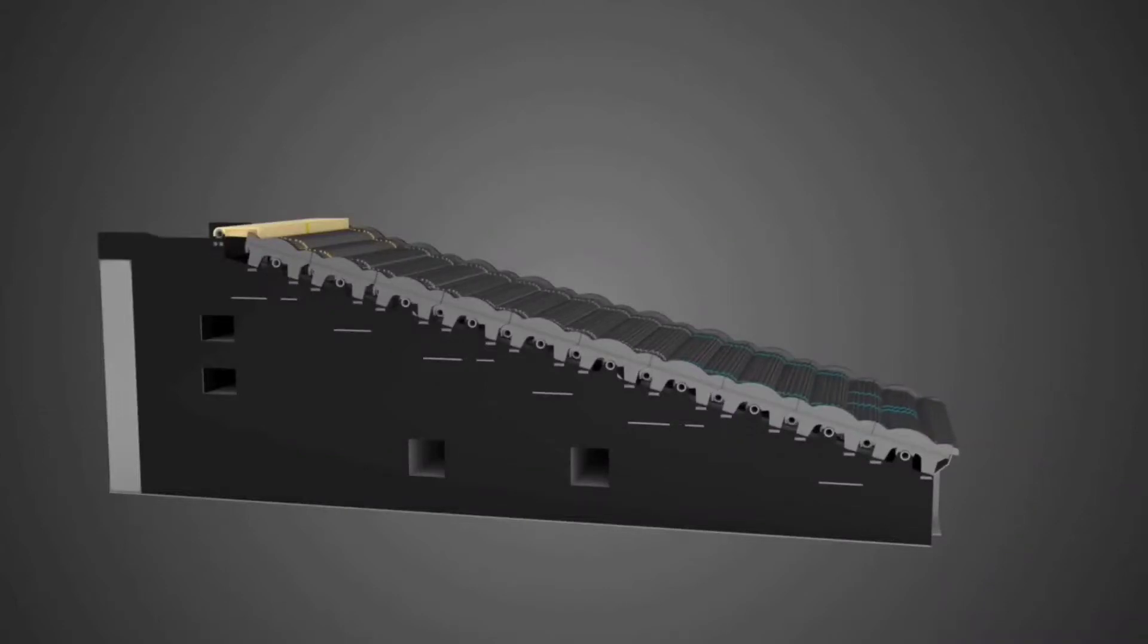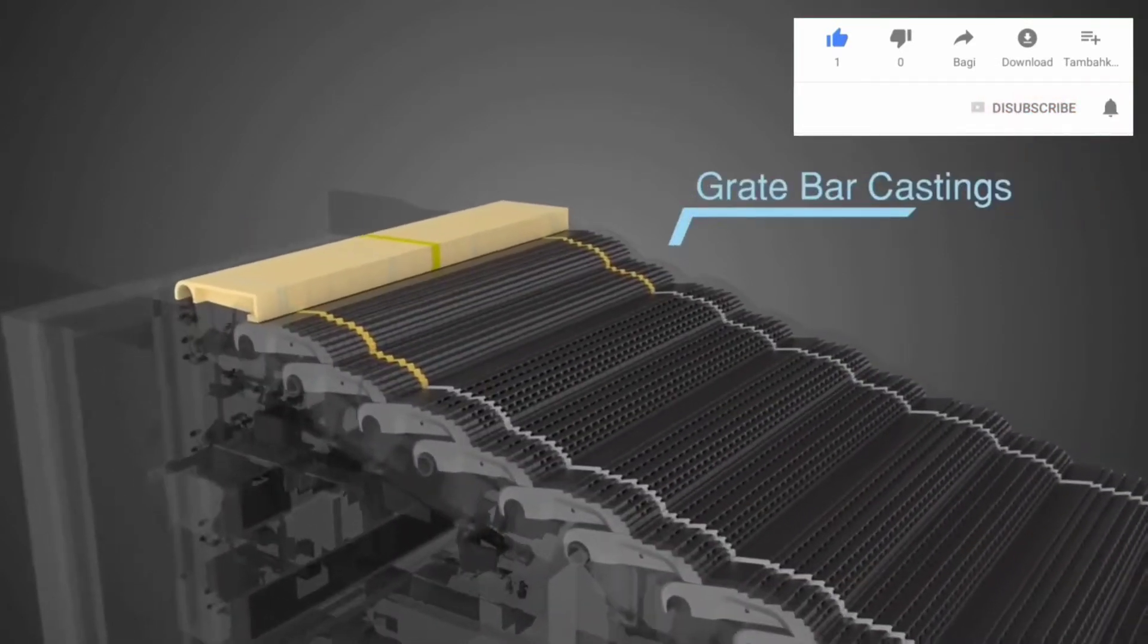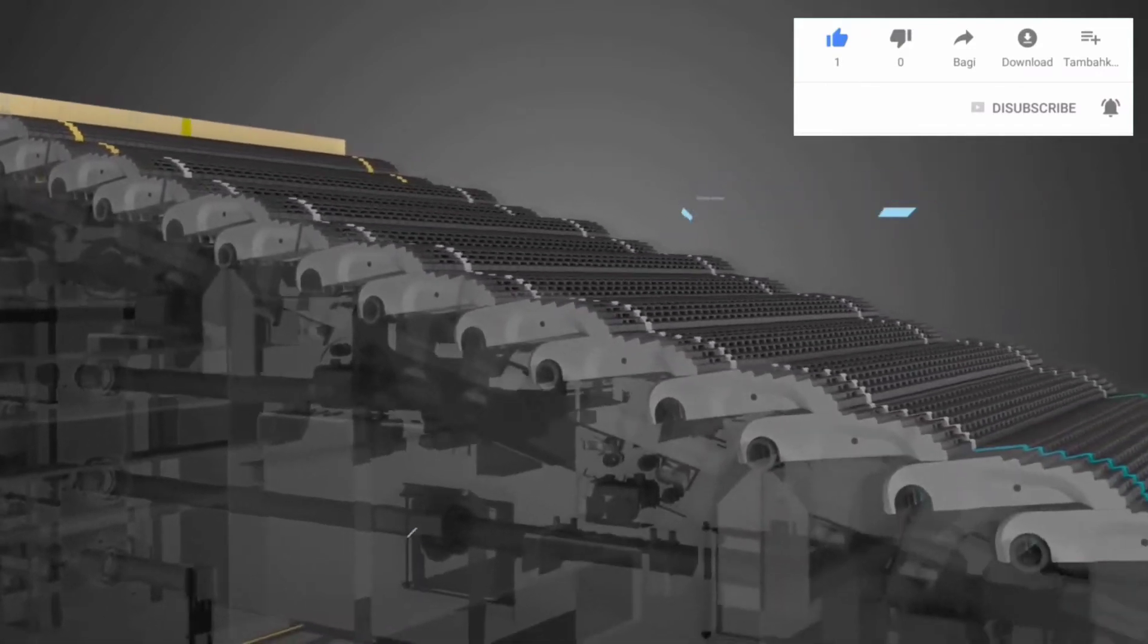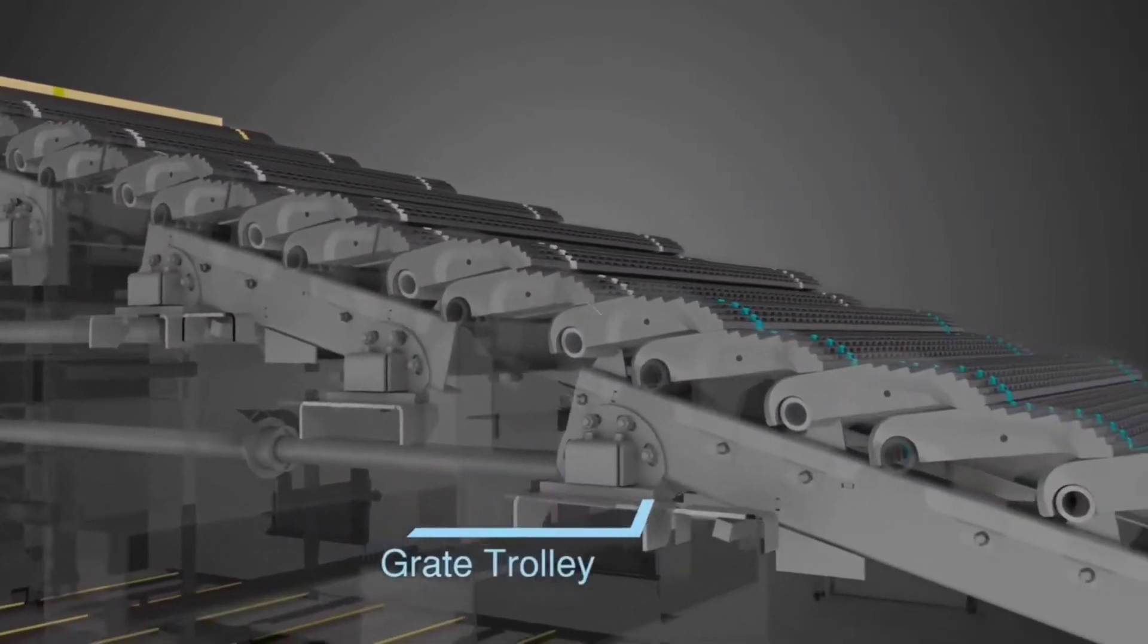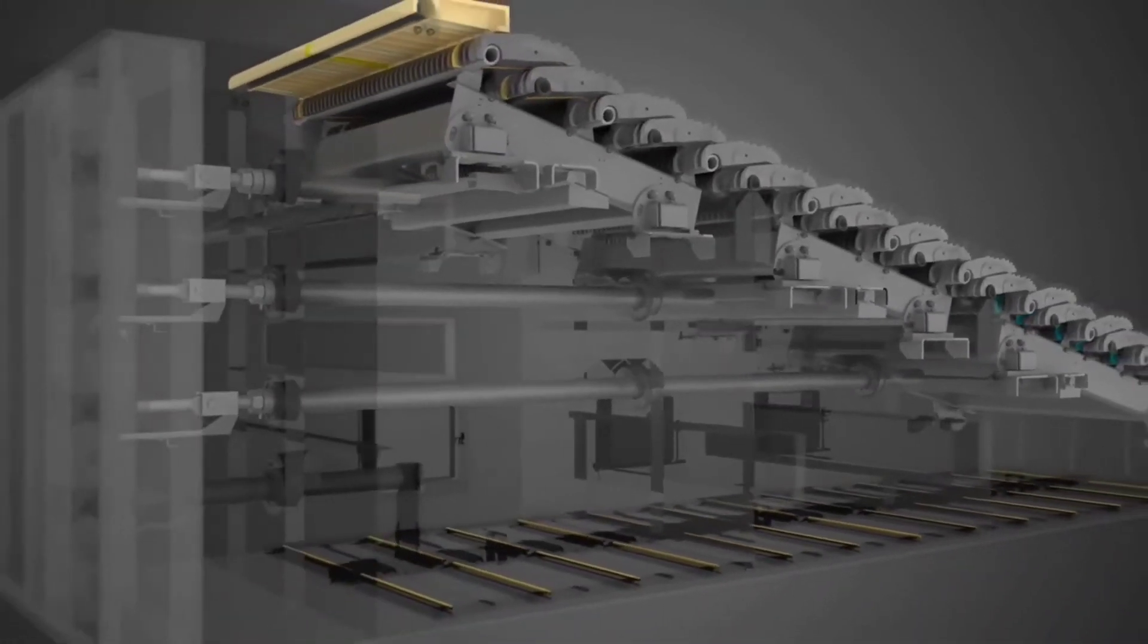As the name suggests, reciprocating grate works on the principle of reciprocating motion. It utilizes successive oscillation of grate castings mounted on different trolleys for the continuous movement of fuel. These trolleys are driven by independent hydraulic cylinders.